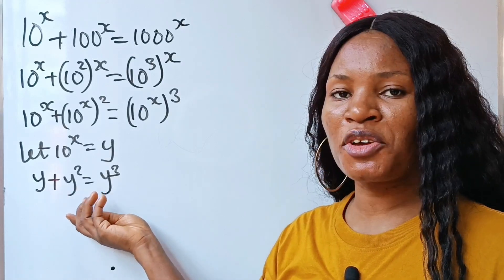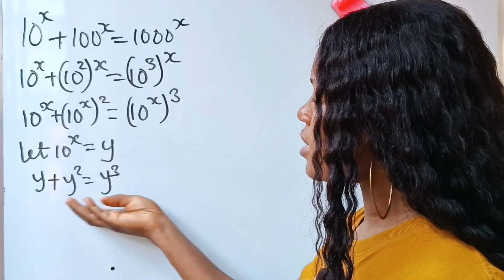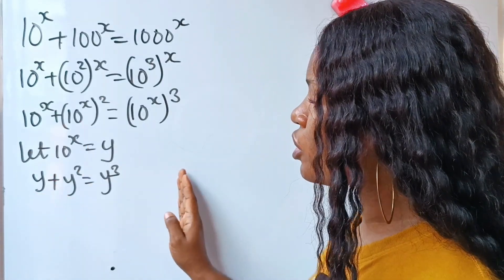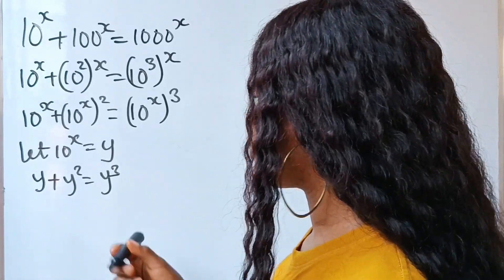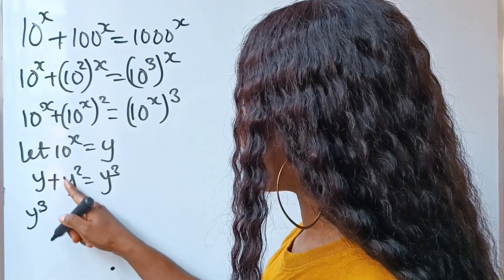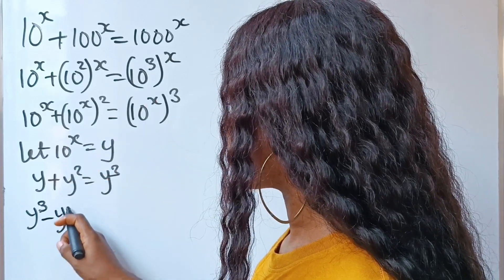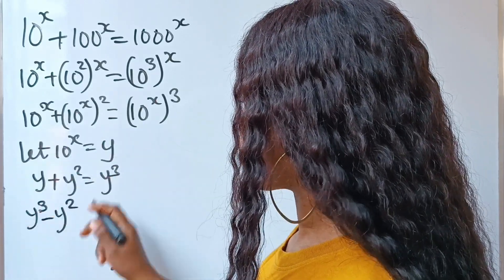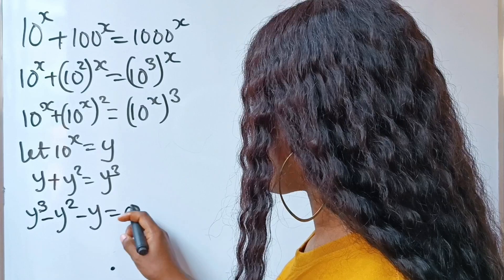Now notice that we just formed a cubic equation. So let's transfer everything to this side of the equation to arrange it all. If we do that, we have y to the power of 3 minus y squared minus y is equal to 0.